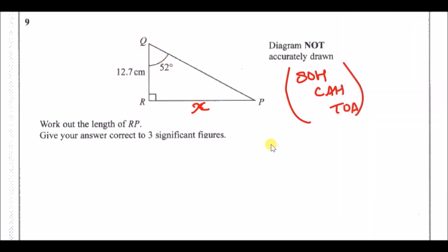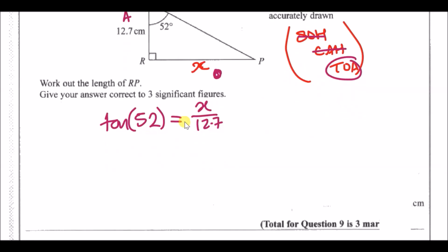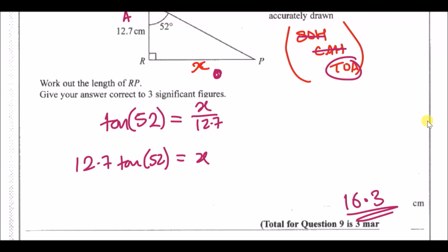Opposite to 52° is the opposite length, and next to 52° is the adjacent. We're working with O and A, so we use TOA: tan(52°) = opposite over adjacent = x over 12.7. Rearranging: x = 12.7 × tan(52°), which gives, to three significant figures, 16.3 centimeters.